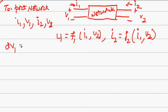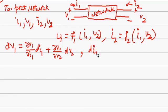We are writing the effect of changes in the terminal quantities by taking the total differential. DV1 equals partial V1 partial I1 times DI1 plus partial V1 partial V2 times DV2. And similarly, DI2 equals partial I2 partial I1 times DI1 plus partial I2 partial V2 times DV2.